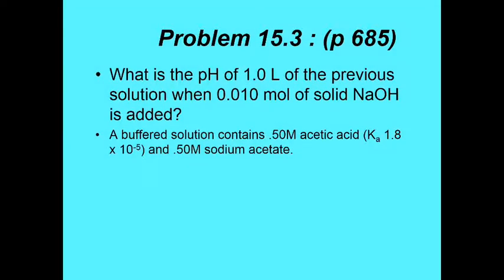All right, so here's a problem. What is the pH of one liter of the previous solution when 0.010 mol of solid NaOH is added? A buffered solution contains 0.50 molarity acetic acid and 0.50 molarity sodium acetate. So we now have to deal with the strong base. Okay, so basically what they've added is OH negative. And how will that shift the equilibrium if you add OH negative?